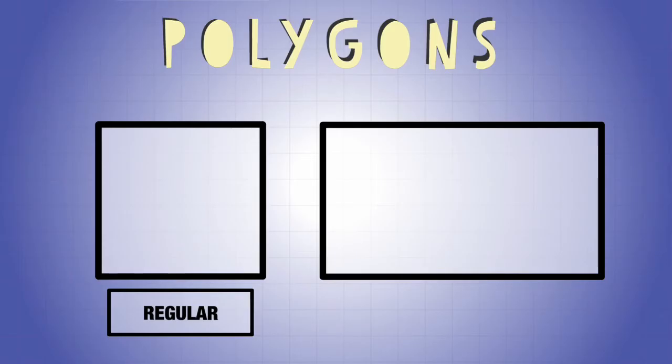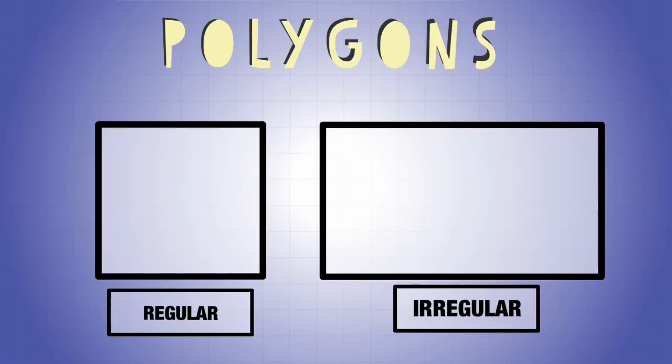So a regular quadrilateral will be what we call a square. Okay, so an irregular, such as this rectangle over here, is one that not all sides are the same. You can see that these two sides are the same and these two sides are the same, but...